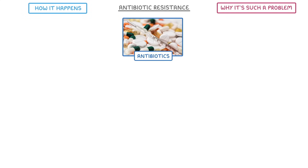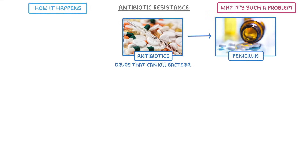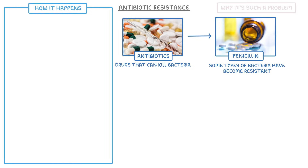If you remember, antibiotics are a group of drugs that can kill bacteria. The most well-known example is penicillin, which was the first one to be discovered almost a hundred years ago. But because we've been using it for so long, some types of bacteria have now become resistant to it. So the first thing we need to understand is how this resistance happens in the first place.